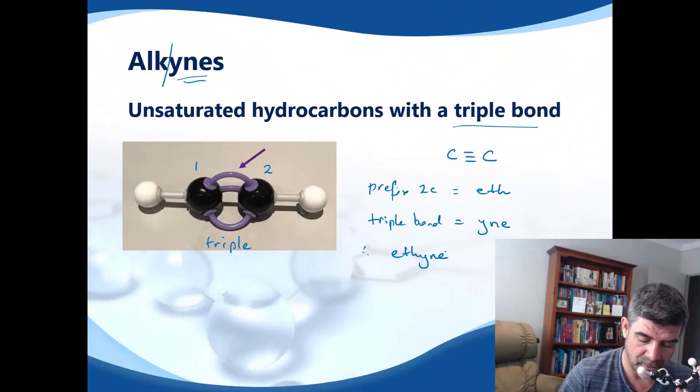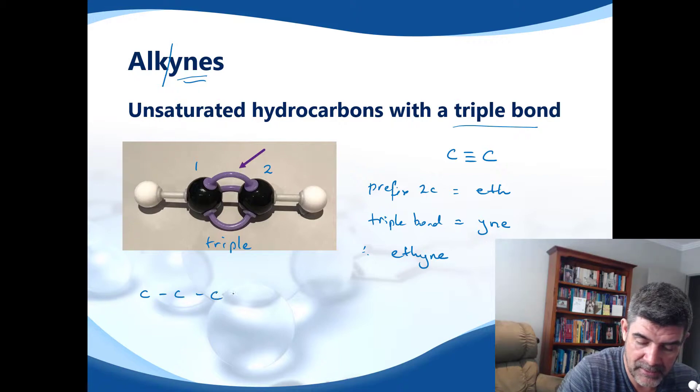You can see that the compound that I have now has a triple bond between the first and the second carbon. Because of that, if I was to draw that for you, I would have a carbon, carbon, carbon, triple bond to another carbon.